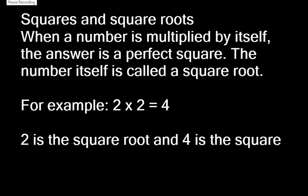Let's look at squares and square roots. When a number is multiplied by itself, the answer is a perfect square. The number itself is called a square root. For example, when we multiply 2 by 2, the answer is 4. 2 is the square root and 4 is the square.